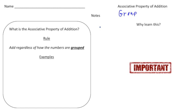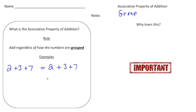The first property we're going to talk about is called the associative property of addition. Basically the rule states that you're allowed to add regardless of how the numbers are grouped, and this is for addition only. So let's say we have two plus three plus seven. According to order of operations I would have to do two plus three first and get five, and then add seven and get twelve.